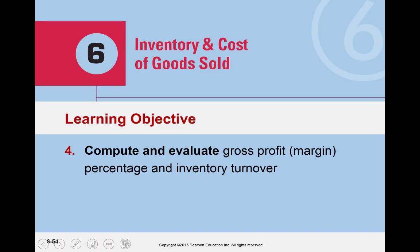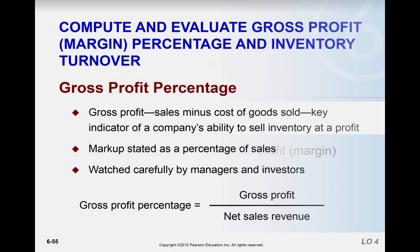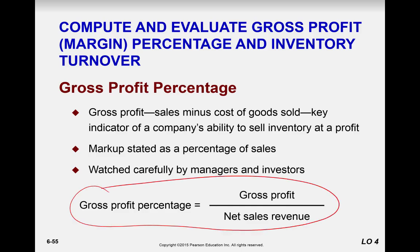Welcome back to our Chapter 6 discussion on inventory and cost of goods sold. We are now going to move our attention to gross profit, computing the gross profit margin percentage, and inventory turnover. You should have this formula in your Excel template: sales minus cost of goods sold equals gross profit, which you should already have from previous discussions in your income statement.